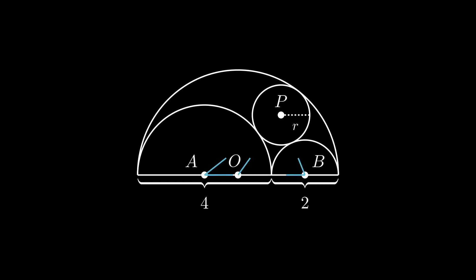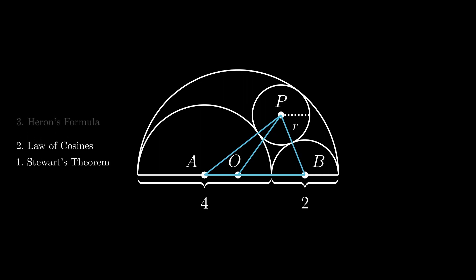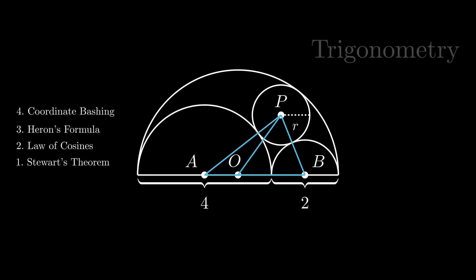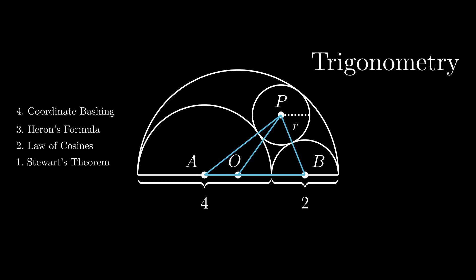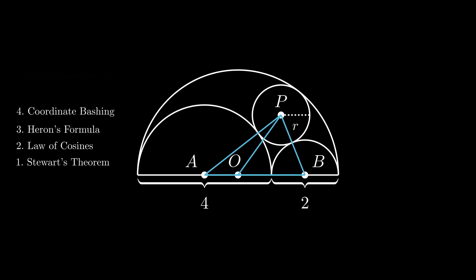Normally one would do this by drawing these blue lines, and the Art of Problem Solving has a bunch of suggested methods. However, all of these methods require trigonometry. What if trigonometry is banned? What if we couldn't use it? Could we still solve this problem? Well, we're not here to learn trigonometry — we're here to learn circle inversion, and I have a couple of methods to show you: one of my own invention and one from the Art of Problem Solving.